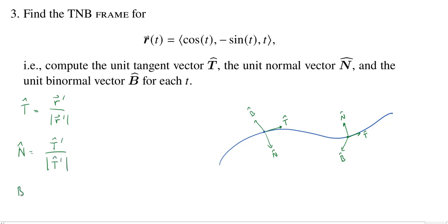And then, finally, to get the unit binormal, well, once you have two vectors which are perpendicular, you can get a third perpendicular vector by just taking the cross product. And since T and N are perpendicular, and since they're both unit vectors, the cross product will also be a unit vector. So we don't actually have to divide by a length at the end.